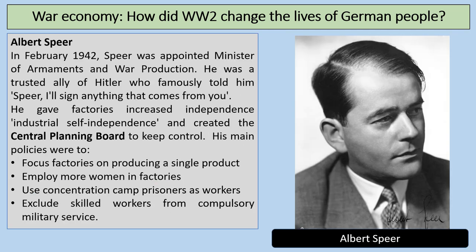Albert Speer, in February 1942, Hitler's architect, was appointed Minister of Armaments and War Production — a trusted ally of Hitler. He was appointed Minister in charge of the war economy. He gave factories increased independence, known as industrial self-independence, but at the same time created the central planning board to keep control of the economy. The main policies were to focus factories on producing a single product, employ more women in factories, use concentration camp prisoners as workers, use forced labour, and exclude skilled workers from compulsory military service.